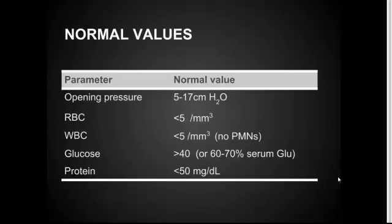First I just want to go through some normal values to compare against once her CSF results came back. A normal opening pressure would be between 5 and 17. You don't want any red blood cells or white blood cells — less than 5 is considered normal. Glucose should be greater than 40, or you can compare to serum glucose, which should be 60–70%. Protein should be less than 50.